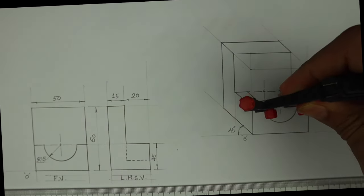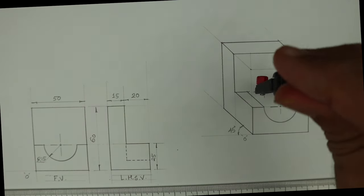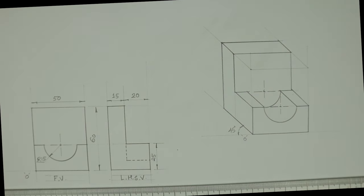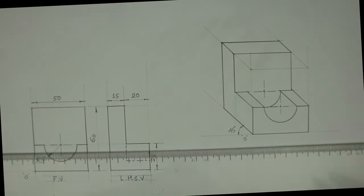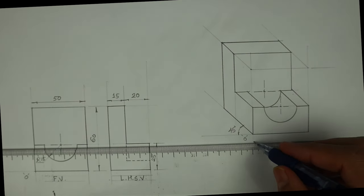Now take this radius, go behind by 20, and again you draw circle. See this, this is how you draw it in oblique. So we got this object. Now we can mark length, width, and height.